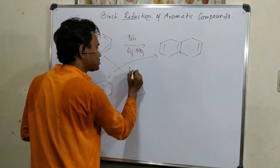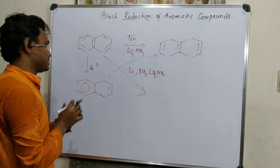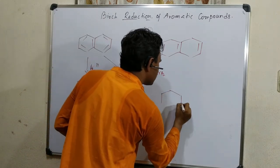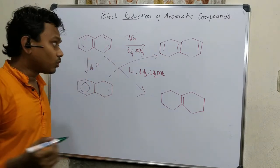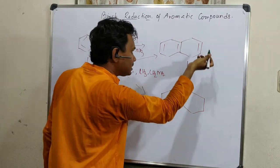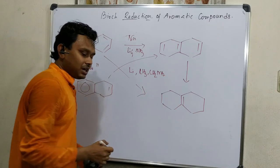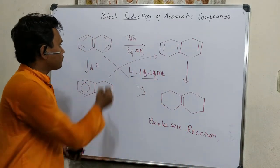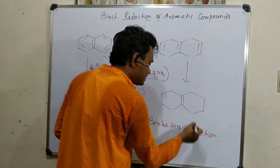If naphthalene is reacted in the presence of lithium and ethylamine, please keep this reagent in mind — this is very important. What happens when this reaction is done with lithium in ethylamine? It produces a more reduced product. This is because when the intermediate diene is produced, it undergoes further reduction as an intermediate diene that gets further reduced in the presence of this dissolving metal reduction. The reduction of naphthalene in the presence of lithium and methylamine is named the Benkeser reaction.